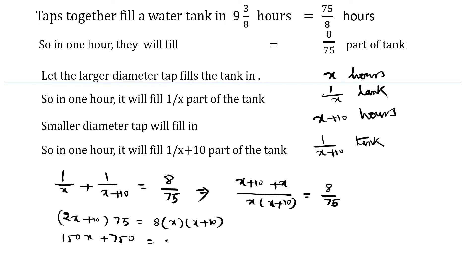Distributing, we get 150x plus 750 is equal to 8x squared plus 80x. Now transferring and collecting terms, we get 8x squared minus 70x minus 750 is equal to 0. At this stage we have effectively translated our description into a quadratic equation.